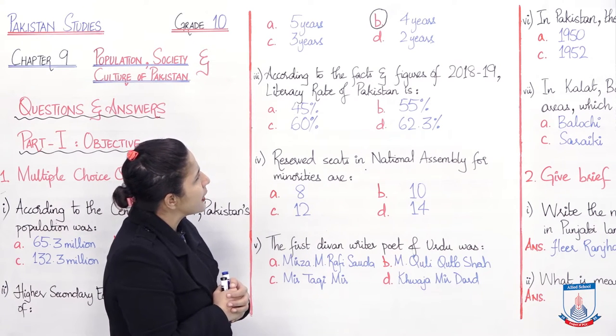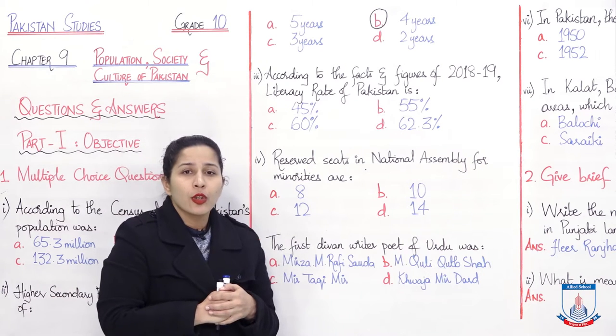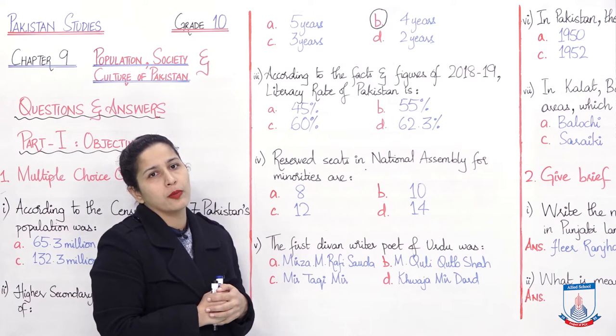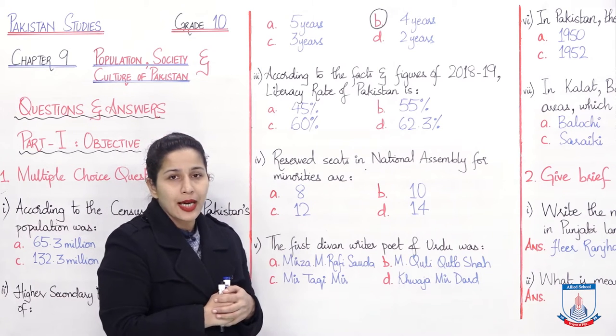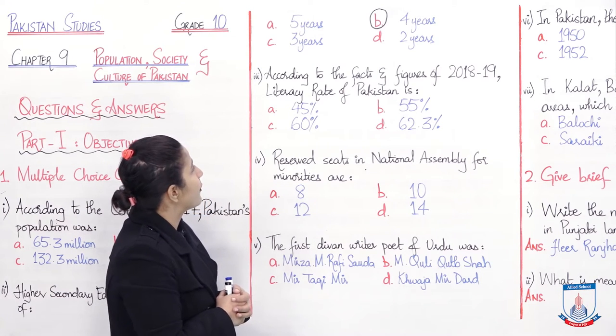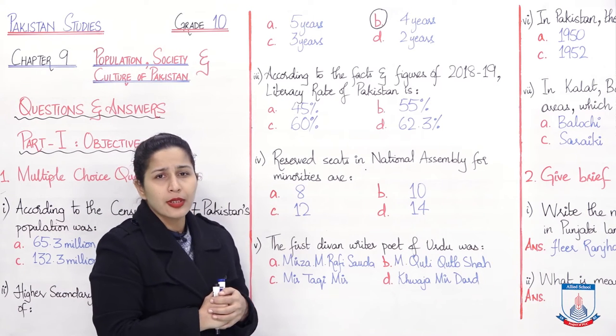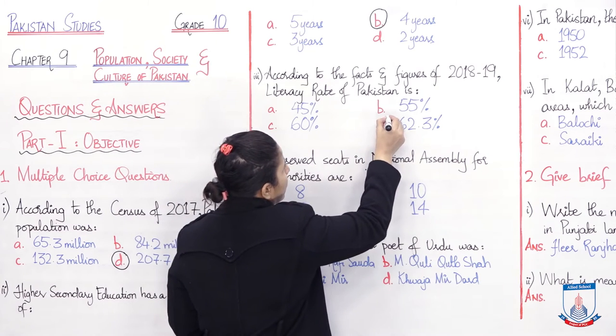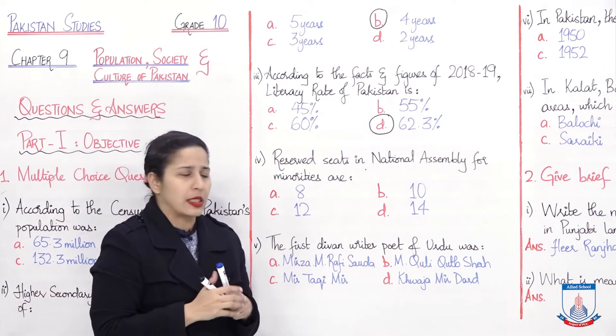Third question is: According to the facts and figures of 2018-19, literacy rate of Pakistan is? According to information collected in 2018 and 19 from Pakistan economic survey, what is Pakistan's literacy rate? There are four options: 45%, 55%, 60%, and 62.3%. Since it's fact, we know that 62.3% is the literacy rate of Pakistan.